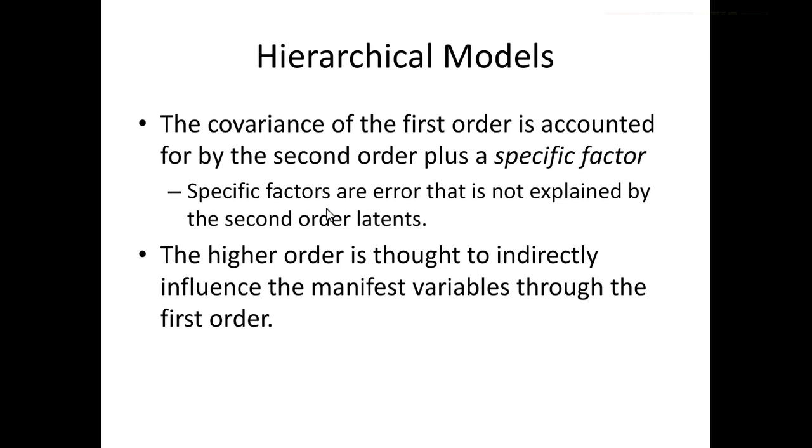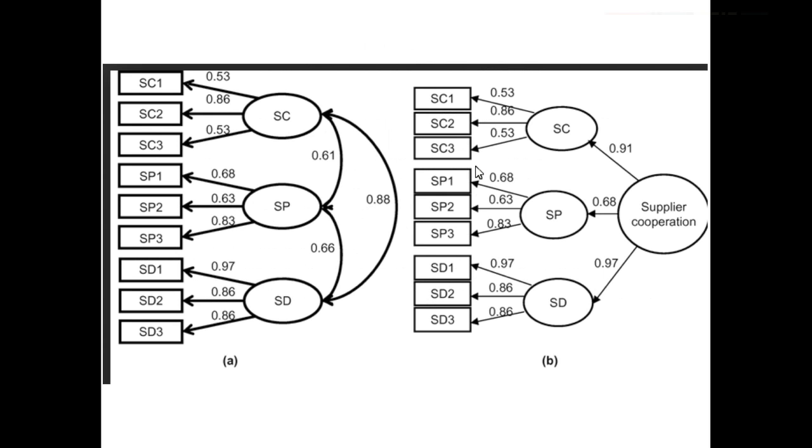But generally to me this is a very theory-based approach where the higher order is indirectly influencing the manifest variables through those first order. So this supplier cooperation, whatever it is, indirectly influences the answers here through these other latent variables. So I think there's this overall factor and within that overall factor I can break it down into three subdomains. So we tend to think about scales a lot this way where scales have a total score but then they also have little individual subscales. This is a way to think about those subscales being subsumed by the total score.